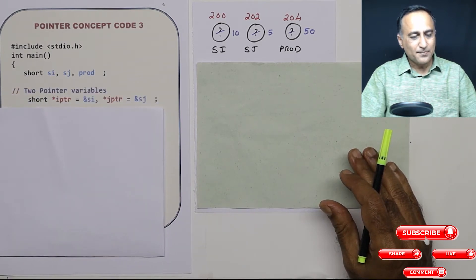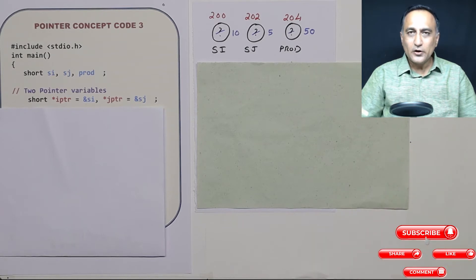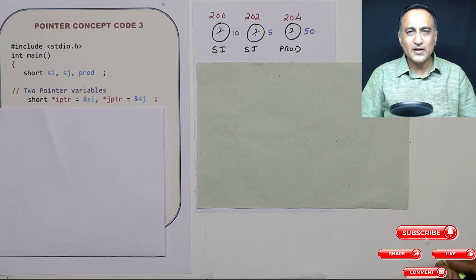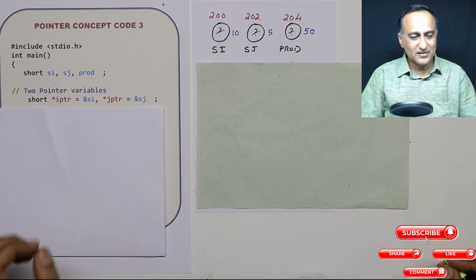In the next step, I am declaring two variables IPTR and JPTR with a star indicating that these are special variables. In place of numbers, they contain addresses.